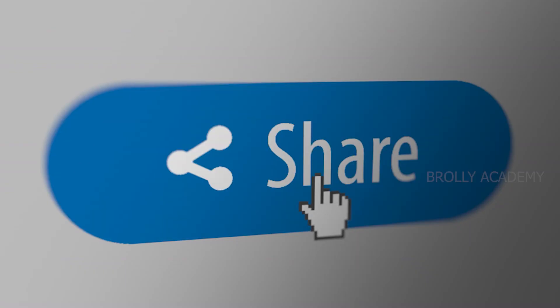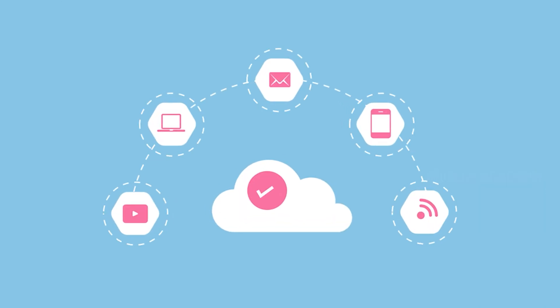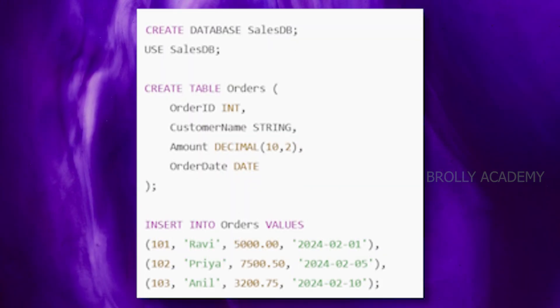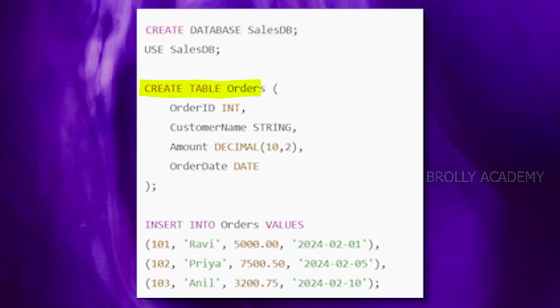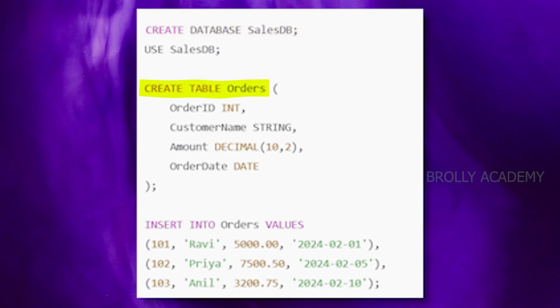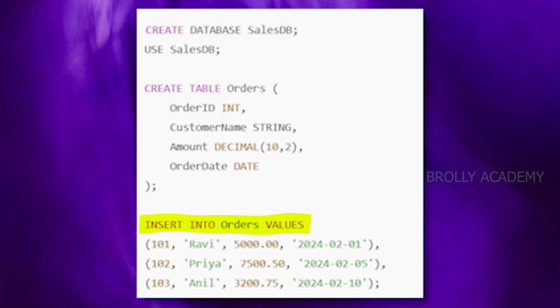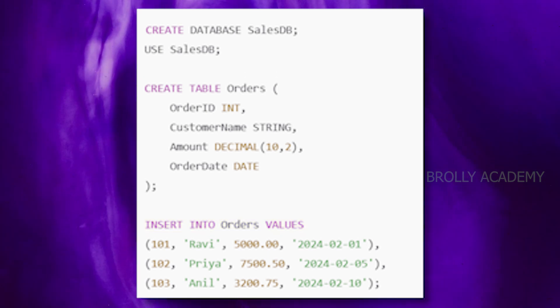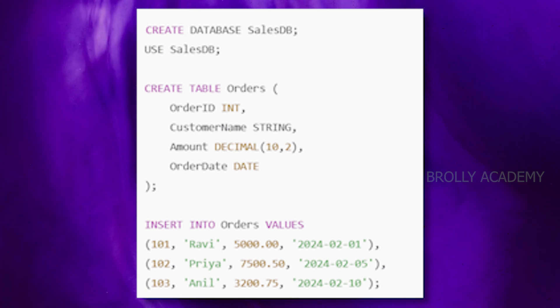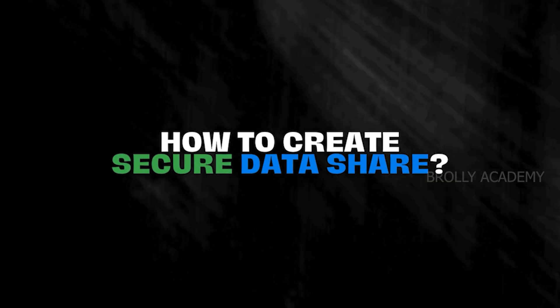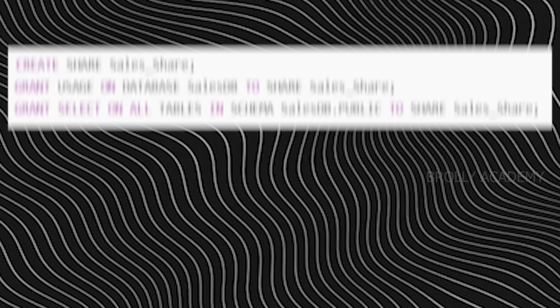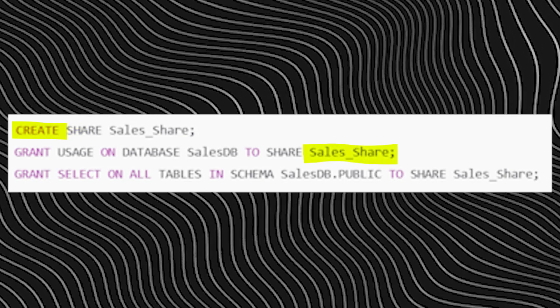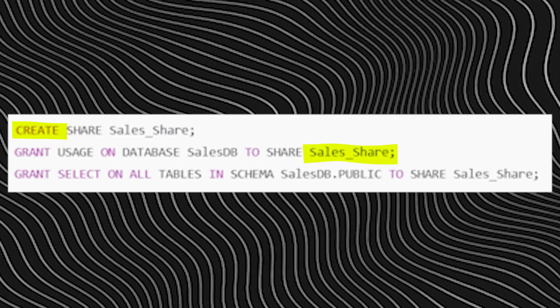What is the architecture? Provider shares data, Customer gets data access. Here is the SQL code. You can create a database, create a sales view in the database, add the order table, add customer orders with values like order ID, customer name, amount, and order date. You can then create a secure data share using the Create command — create a sales share, create a secure share.